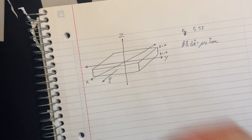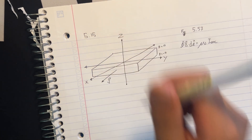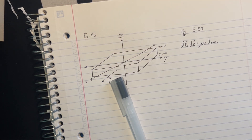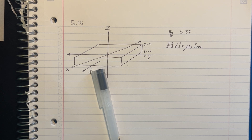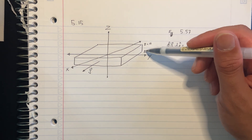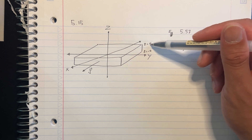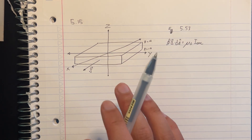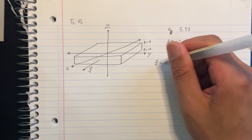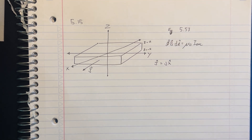Welcome everybody. This is a video on how to do problem 5.15 in the book Introduction to Electrodynamics by David J. Griffiths, fourth edition — make sure you are on the right version of the textbook. Problem 5.15 states that a thick slab extending from z equals negative a to z equals positive a, and infinite in the x and y directions, carries a uniform volume current J equals J x-hat. Find the magnetic field as a function of z both inside and outside the slab.